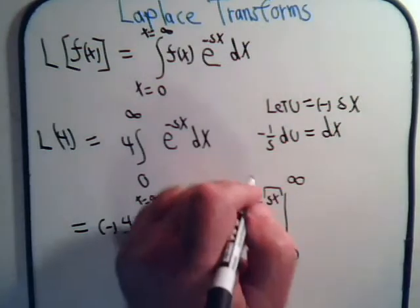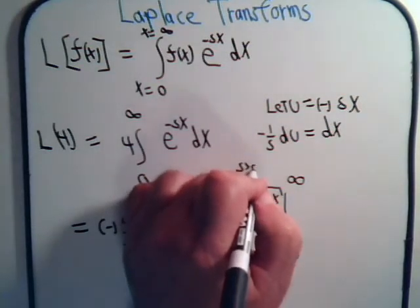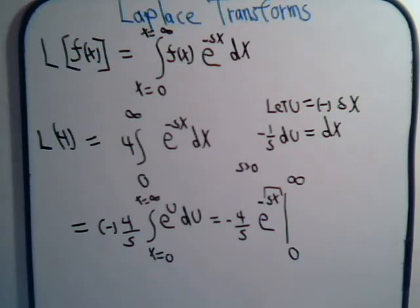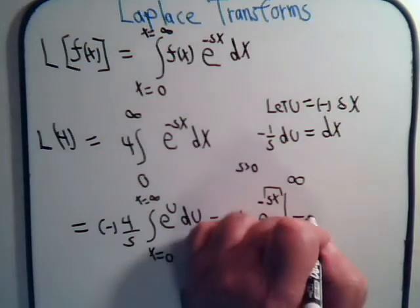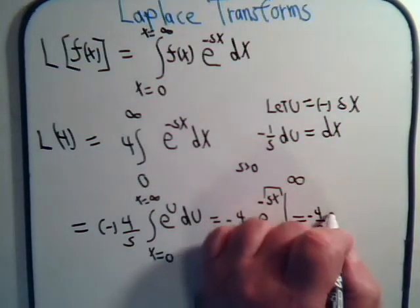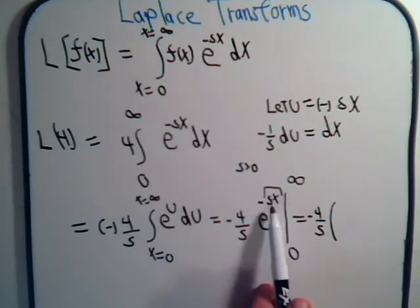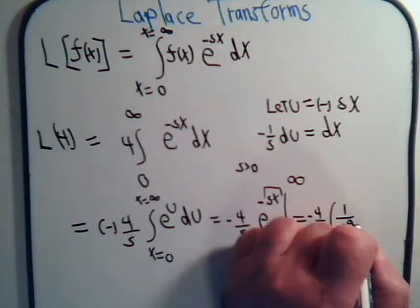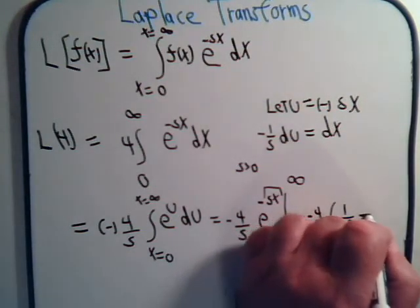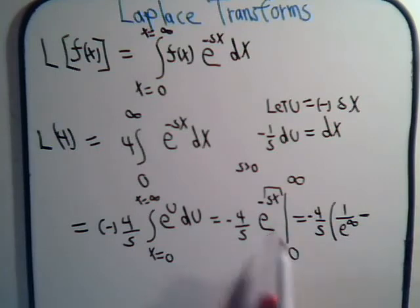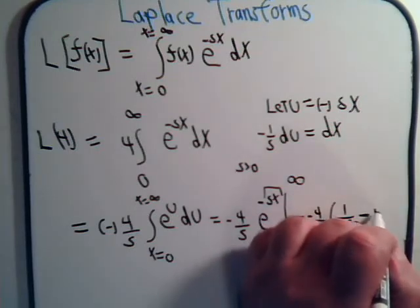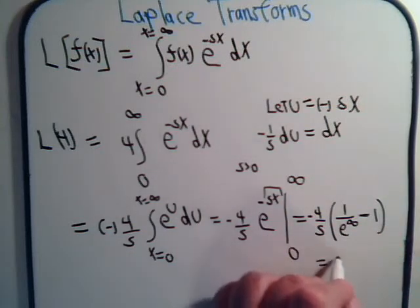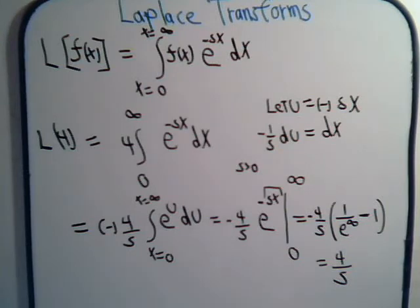The only requirement we have is that s be greater than 0. Then we have minus 4 over s times e to the minus infinity, which is 1 over e to the infinity, minus e to the 0, which is 1. So this equals 4 over s.